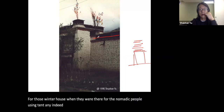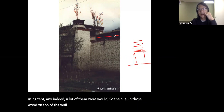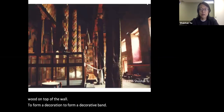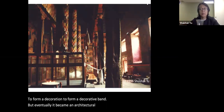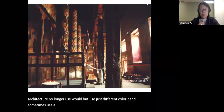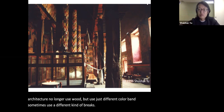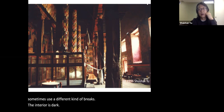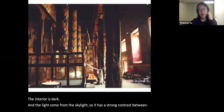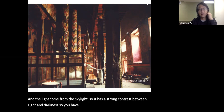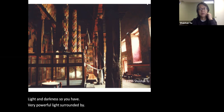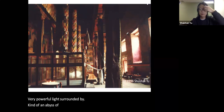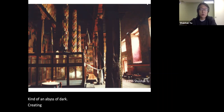Indeed, a lot of them were wood. They piled up those logs on top of the wall to form a decorative band. But eventually it became an architectural motif, and high-level architecture no longer uses wood — instead using different-color bands, sometimes different kinds of bricks. The interior is dark and light comes from the skylight, creating a strong contrast between light and darkness — very powerful light surrounded by an abyss of dark, creating spatial drama for the interior.